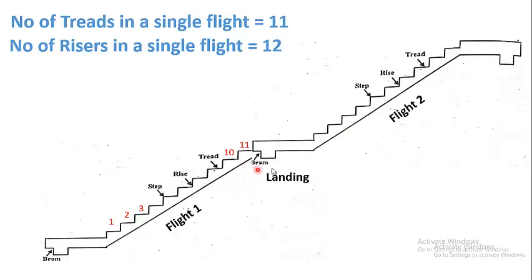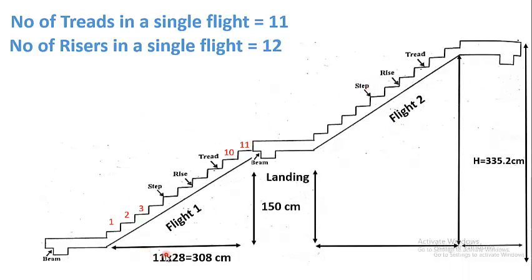This arrangement achieves the total required height while following the requirements of good stairs. The horizontal distance for one flight is 11 threads × 28 centimeters = 308 centimeters. Both flights are identical and contain equal numbers of risers and threads. The landing provided between the two flights has a length of 150 centimeters.